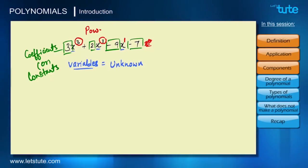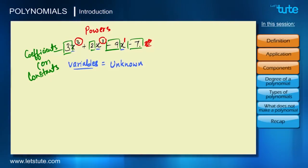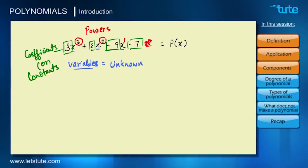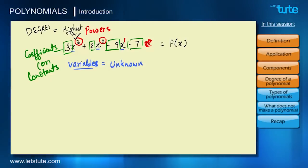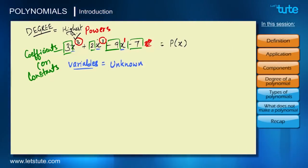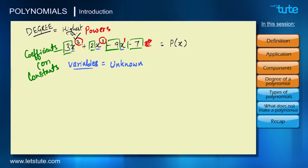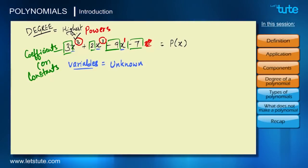Those numbers on top of the variables are called powers or exponents. This polynomial, which is only in terms of x, is written as p(x). It has a highest power of 3, and that highest power is called the degree of the polynomial. The powers decrease as 3, 2, 1, 0, so the degree represents the maximum power. If there were a term with power 4, then the degree would be 4.